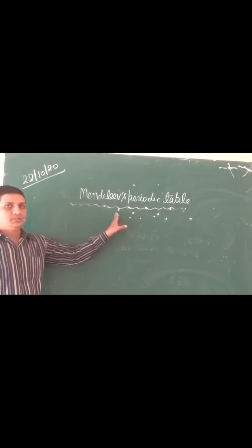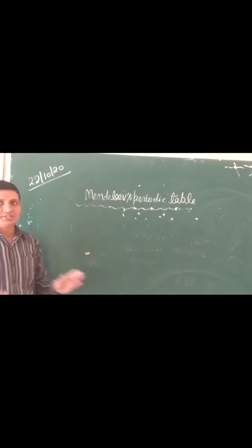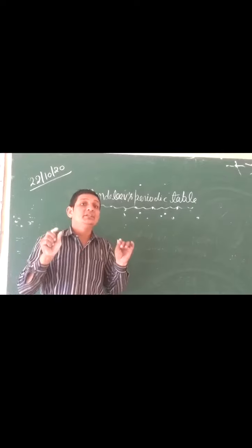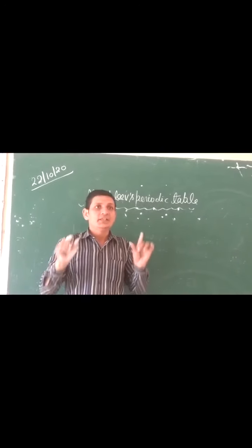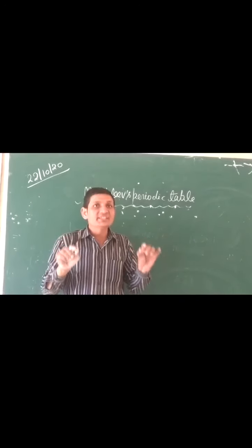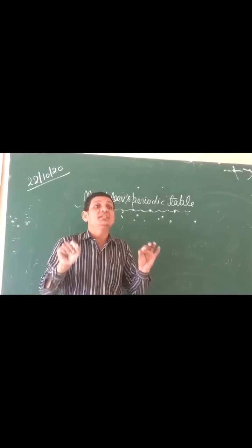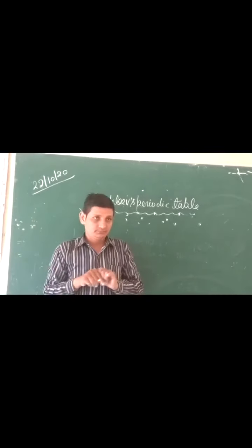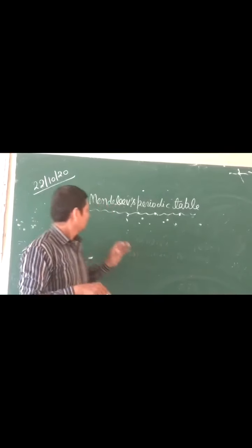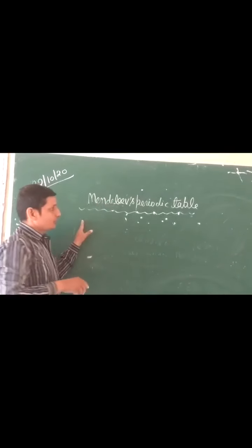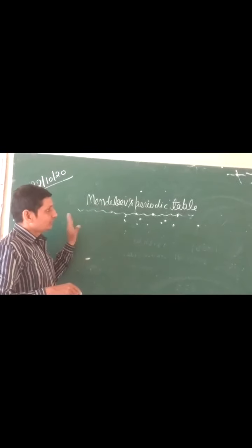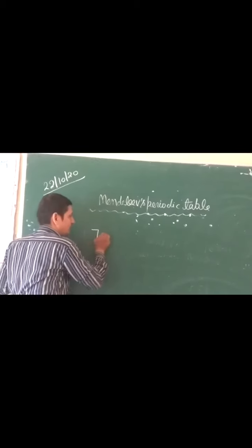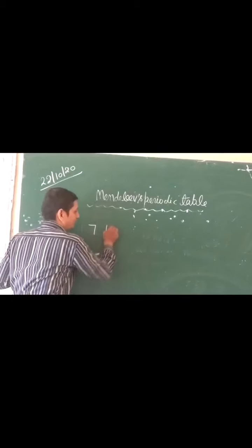Regarding the periodic table — when Mendeleef prepared this periodic table, only 63 elements were known at that time. According to this periodic table, there are 7 horizontal rows.